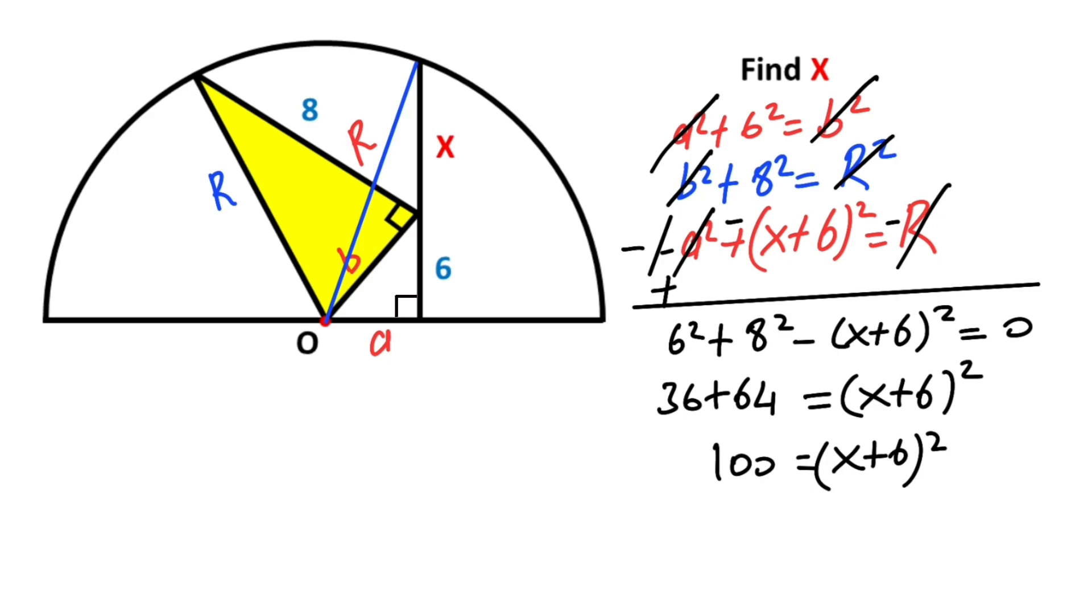Let's take the square root of both sides. These cancel, therefore 10 = x + 6, so x is going to be 4 units. That's all!